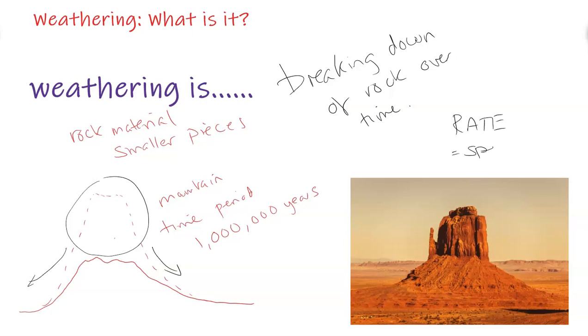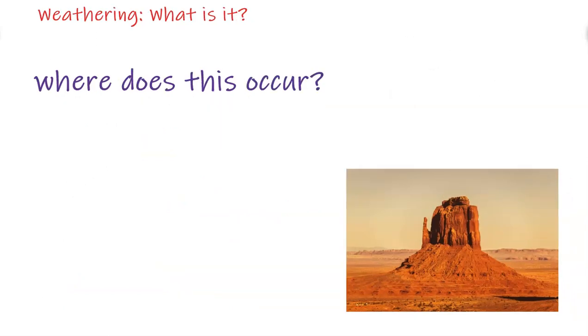If I say rates, I mean different speeds at which this occurs or happens. And the rate can be different in different parts of the world through a set of factors. A set of factors can control how fast this weathering process occurs on the Earth's surface. So where does this occur? This occurs on the Earth's surface. Whether it's flat, or it has some hills, or mountains, or valleys, wherever the terrain or landscape is, it occurs on the Earth's surface.